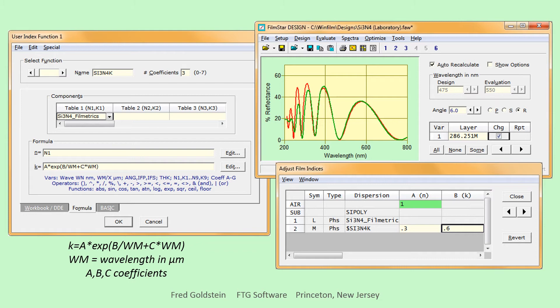We define user index function Si3N4K, where N is interpolated from the filmetrics table, and K is given by a Cauchy formula with Wm wavelength in microns. The interactive windows at the right enable us to quickly find coefficients superimposing measured green and calculated red spectra.